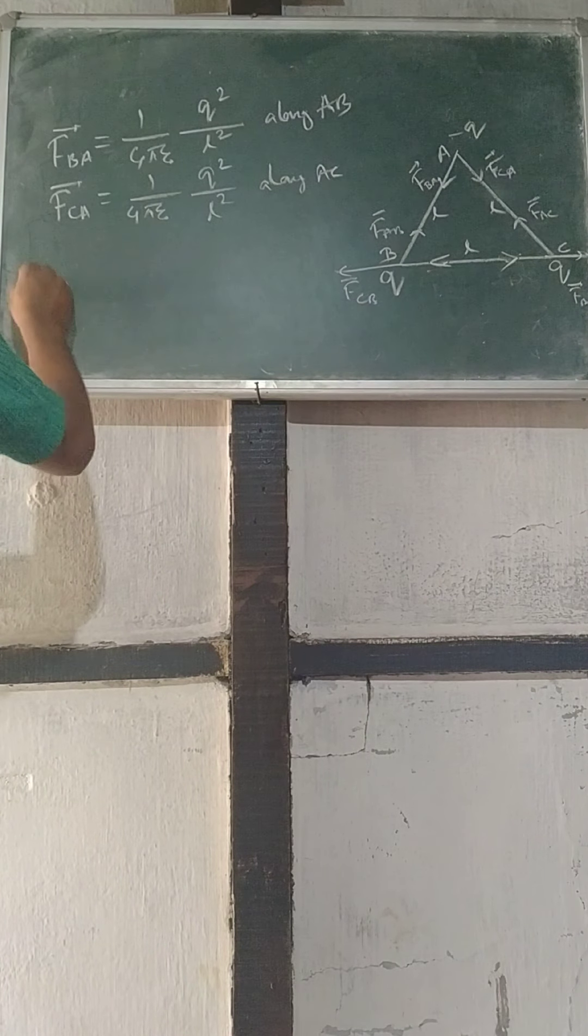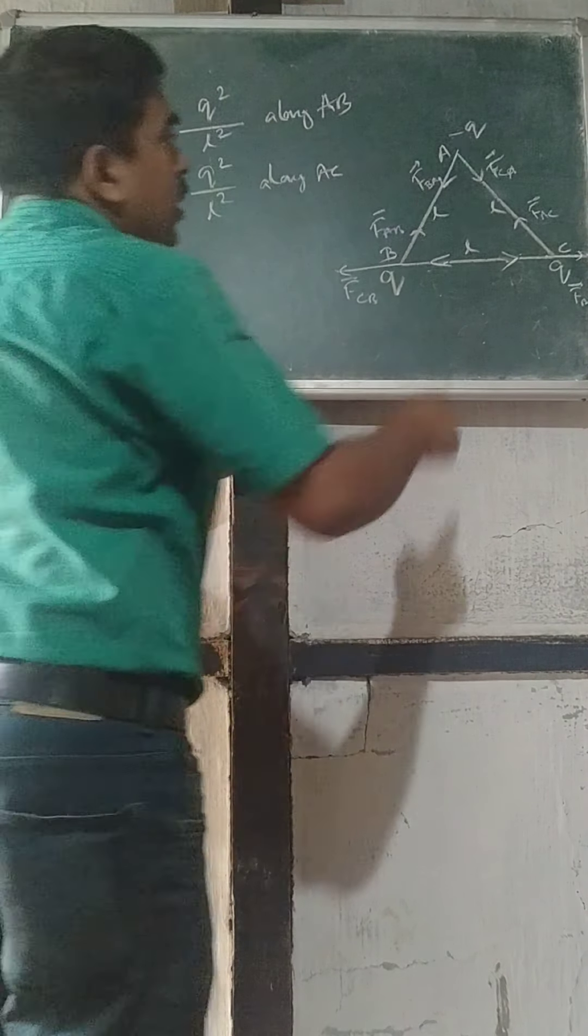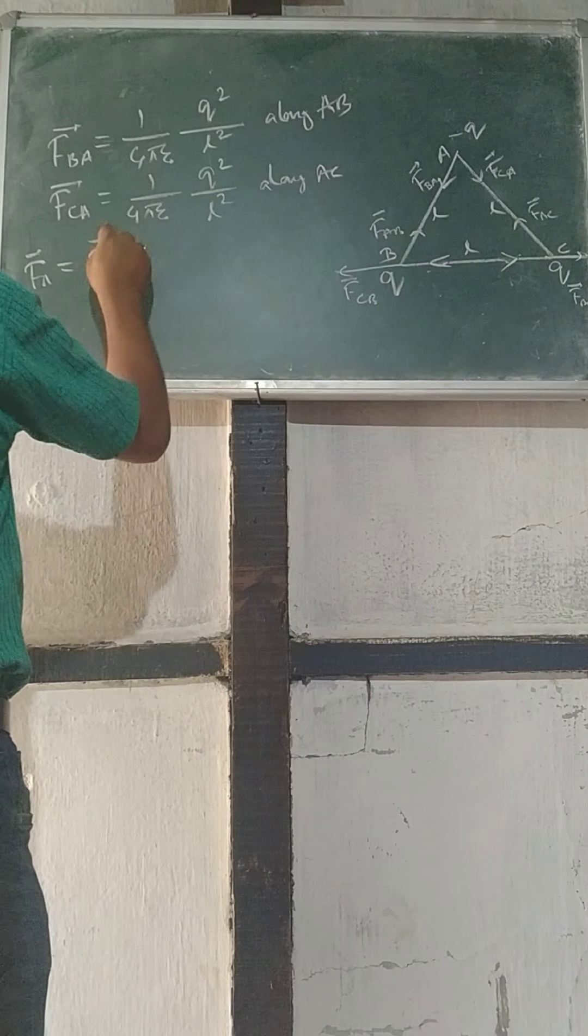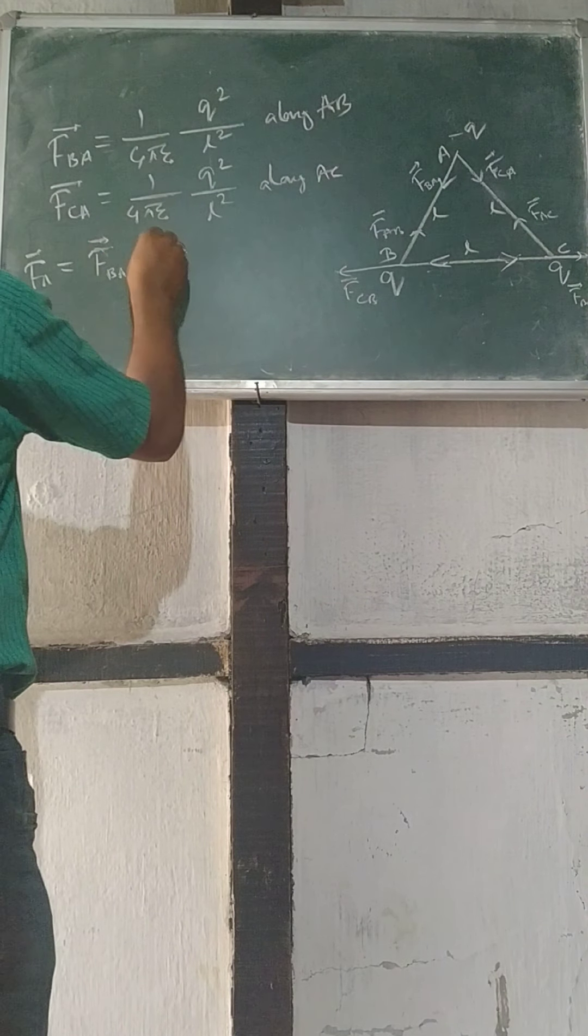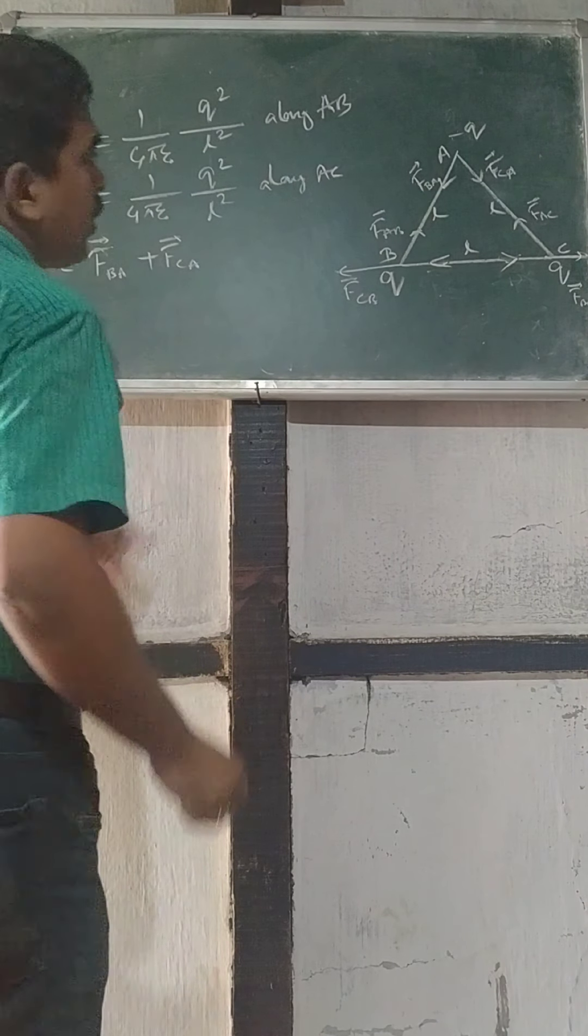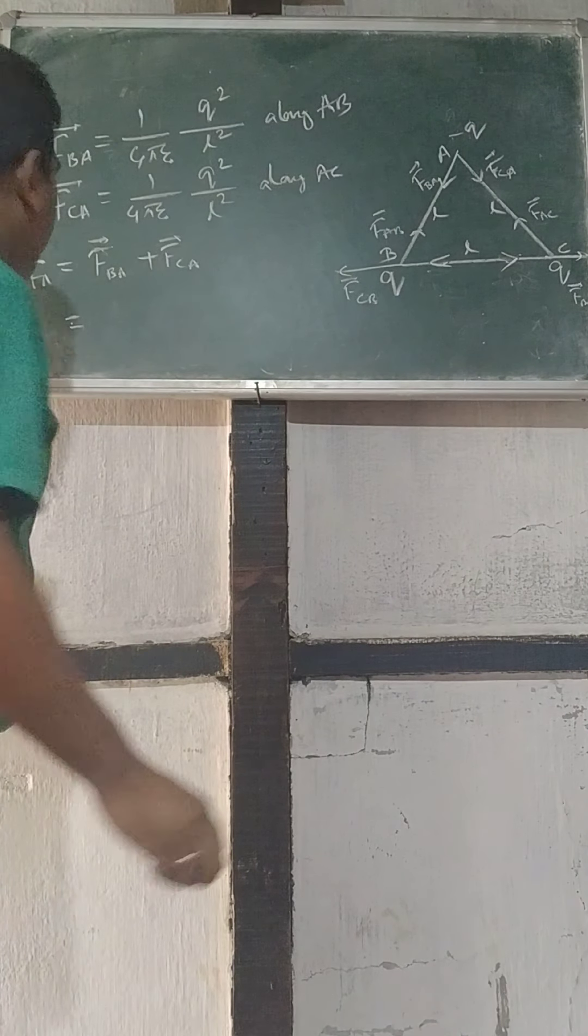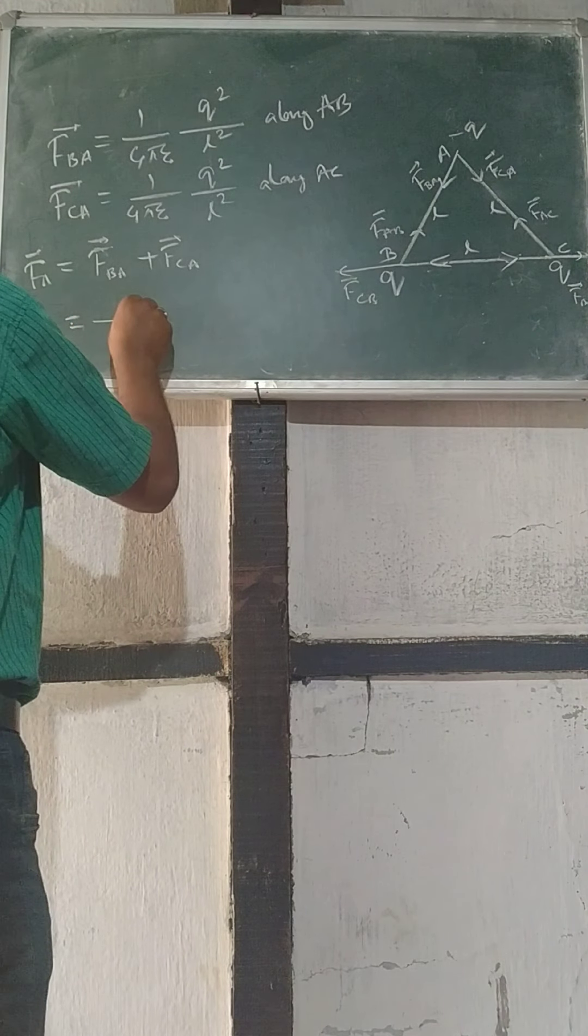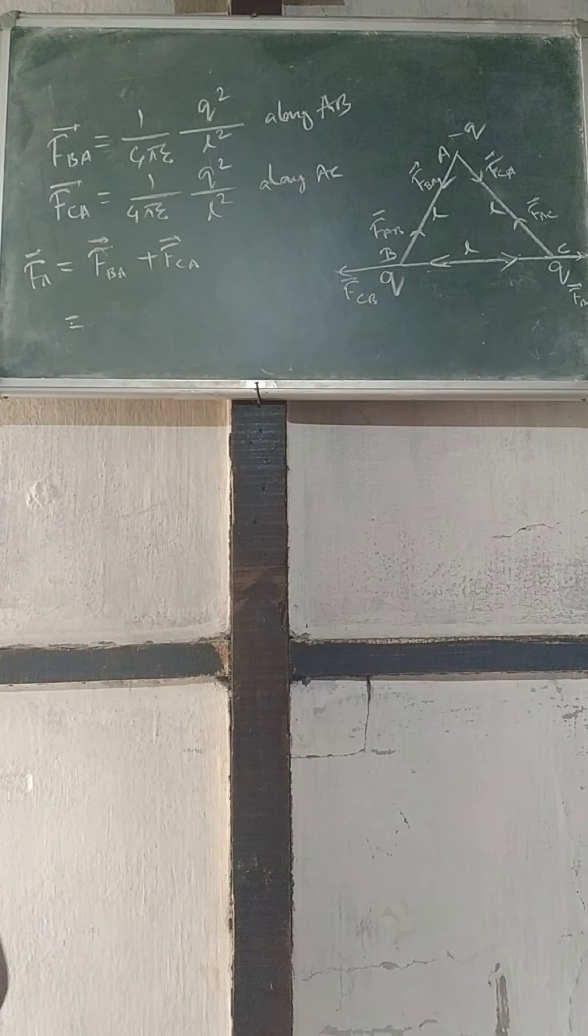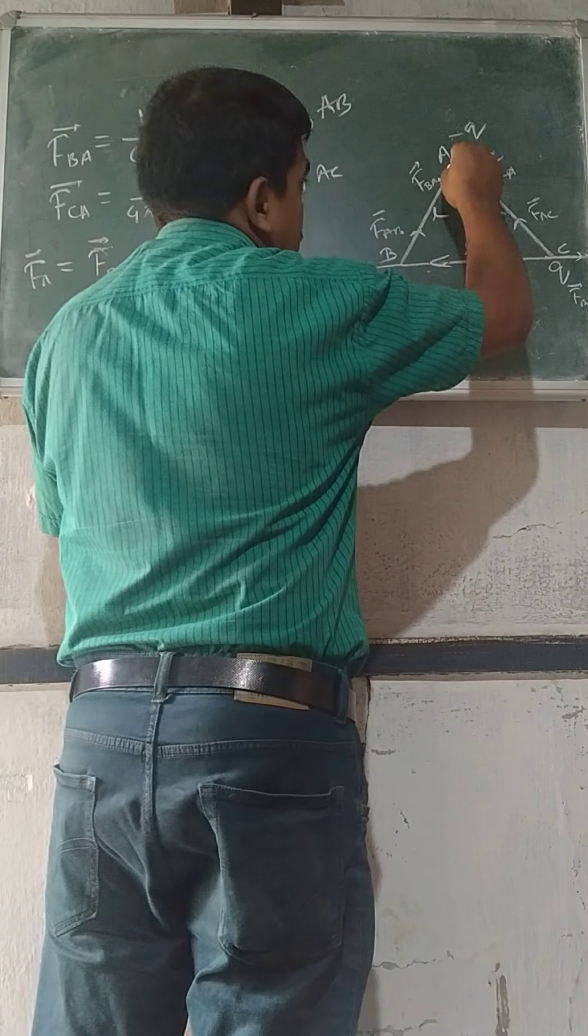So force on A is given by vector sum of FBA and FCA. FBA plus FCA. What is the vector sum of FBA and FCA? FBA force is given by - that you cannot do. We have to calculate using this 30 degree. This is 60 degree.